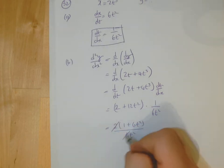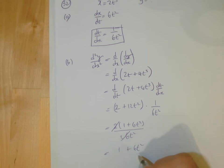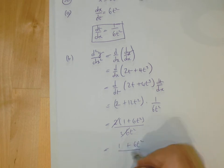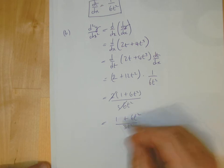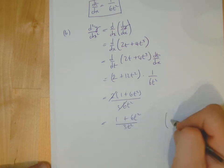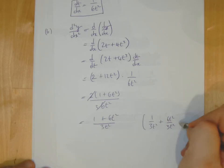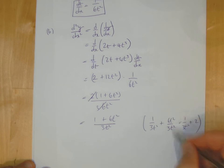1 plus 6t squared. I'm going to just factorize that top there. And you've got 6t squared there. Because you're timesing by 1 over 6t squared, but I've just taken out a 2 there on the top. Because they will cancel there. So I get 1 plus 6t squared over 3t squared.